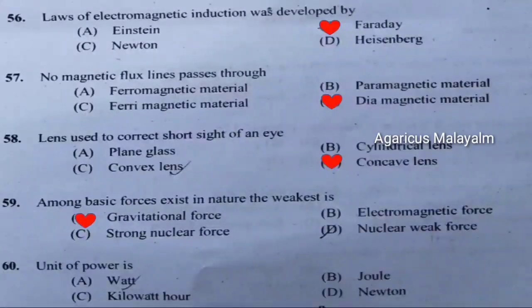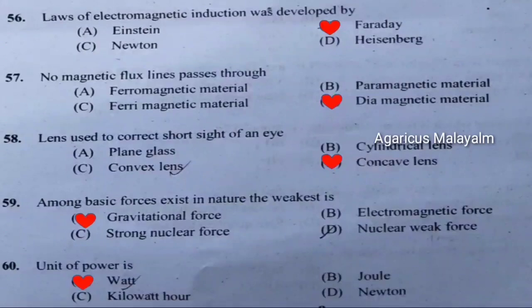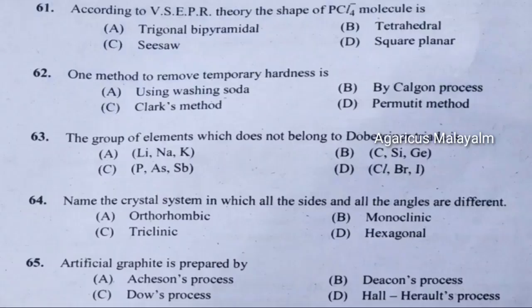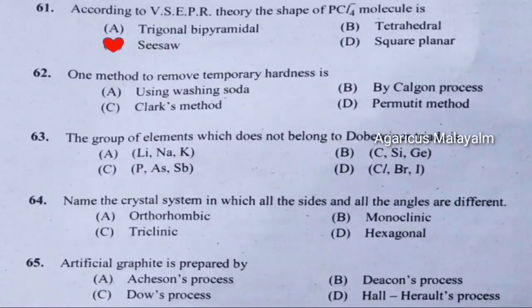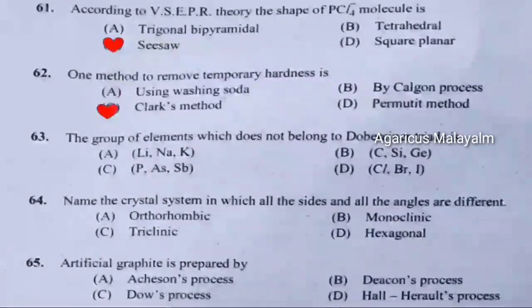Sixtieth question: Unit of power. Correct answer is option A — watt. Sixty-first question: According to VSEPR theory, the shape of PCl5 molecule is. Correct answer is option C — seesaw. Sixty-second question: One method to remove temporary hardness is. Correct answer is option C — Clark's method.